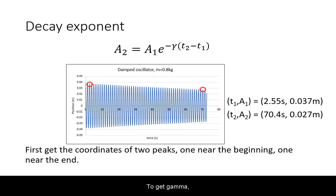To get gamma, find two peaks, one at the beginning and one at the end of your graph. Get both the time and position coordinates for these peaks.